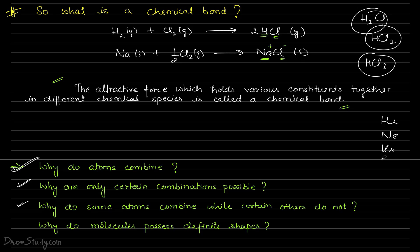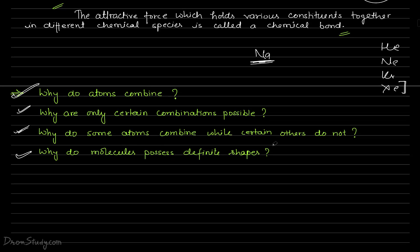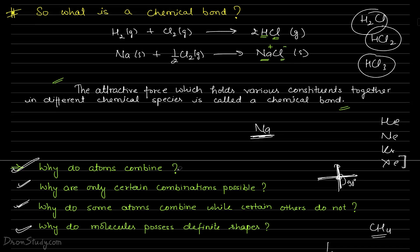Noble gases — helium, neon, krypton, xenon — though xenon does form some compounds, generally noble gases have very little tendency to react, which is why they are called noble. Some elements don't react, some react a little, some react very strongly — like sodium dropped in water gives a very exothermic reaction with a lot of heat release, sometimes catching fire. Also, why does methane not have a cross shape with 90-degree angles? The actual bond angle is 109.5 degrees — why? Why does it have a definite shape? All these answers will be studied in the different theories of this chapter.